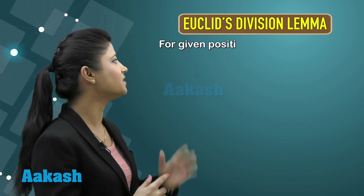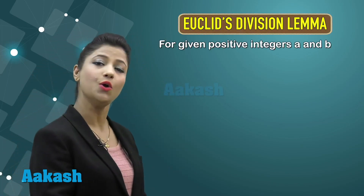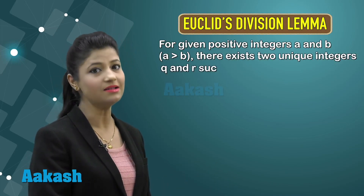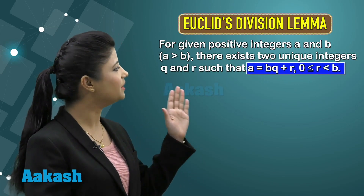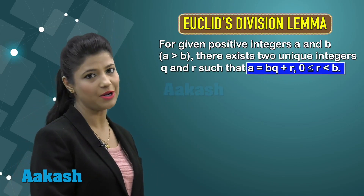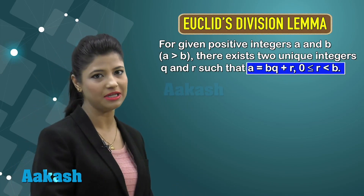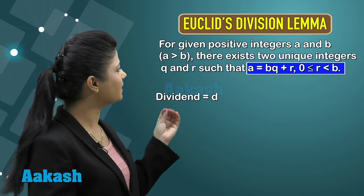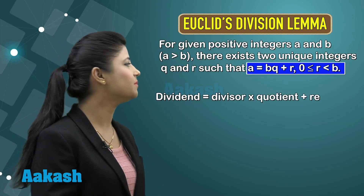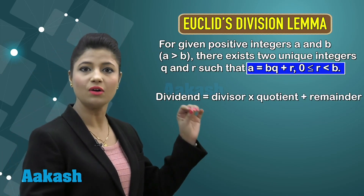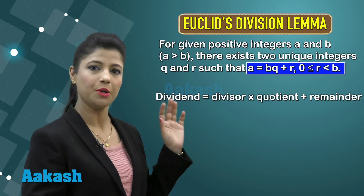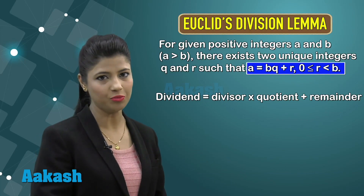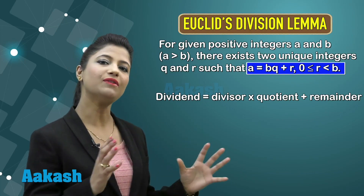For Euclid's division lemma: for any two positive integers a and b, where a is greater than b, there exist two unique integers q and r such that a = bq + r, where r is greater than or equal to 0 but less than b. This is just a restatement of the normal division algorithm — dividend equals divisor times quotient plus remainder, where remainder is always less than the divisor.